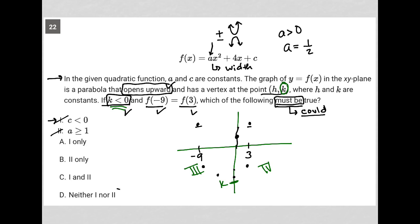Which means that only choice D makes any sense. It's neither 1 nor 2. I think both of these, by the way, could be true. It could very well be that c is less than 0. It could very well be that a is greater than or equal to 1. I just don't think they have to be true at all. So that's why I choose D.